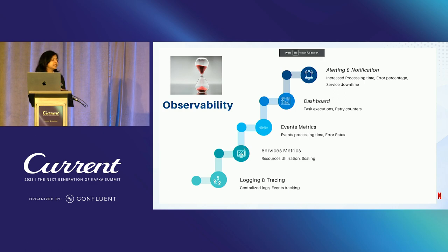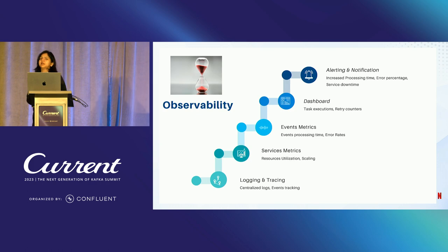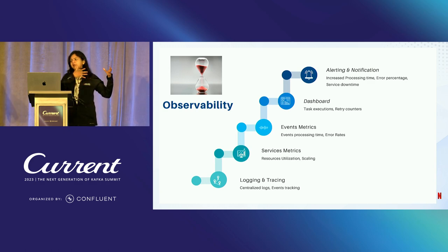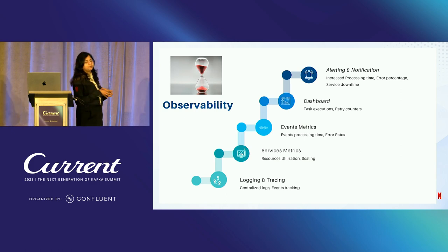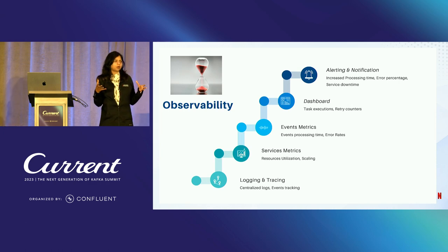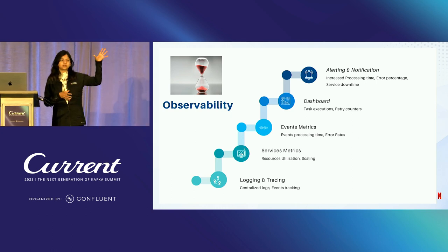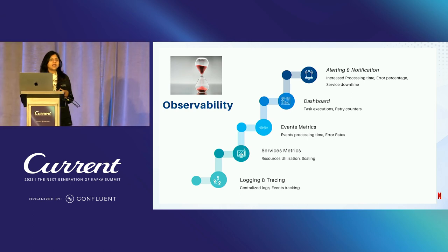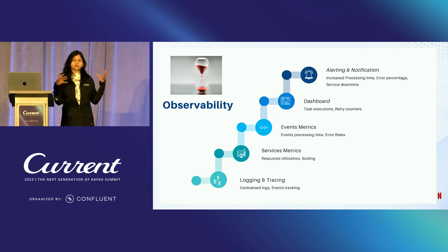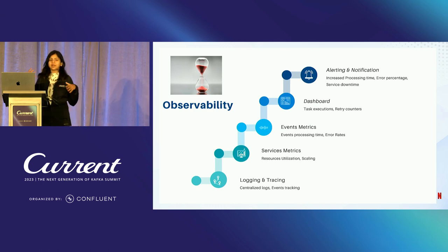All services in our ecosystem are monitored for CPU and memory usage to detect resource contention and predict when they might fail. We track event processing time — whether it's under control or taking longer — and error rates, whether specific to one service or system-wide. What helps most is an aggregated dashboard providing a unified view of all these metrics: error rates, processing times, and error counters, where we can drill down to identify issues.